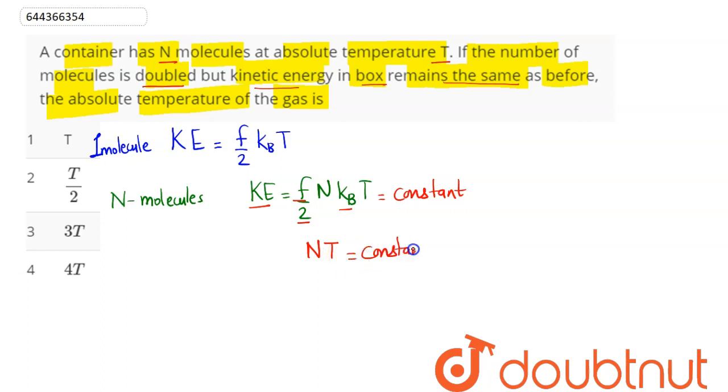So from here we can say product of number of molecules into temperature, that is N₁ × T₁, will be equal to N₂ × T₂. Hence initial molecules as N, initial temperature as T. Here it says number of molecules is doubled, final temperature is being asked.